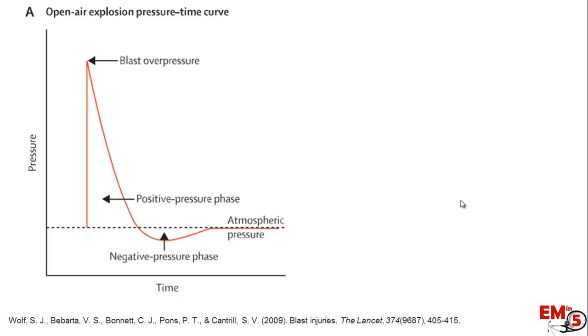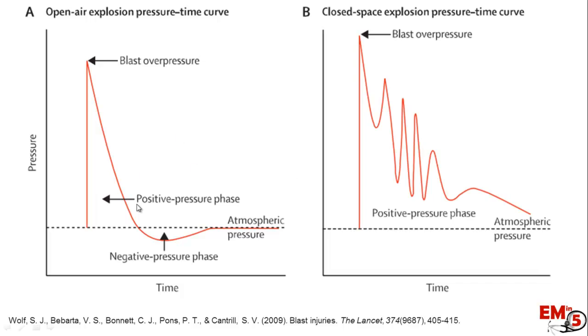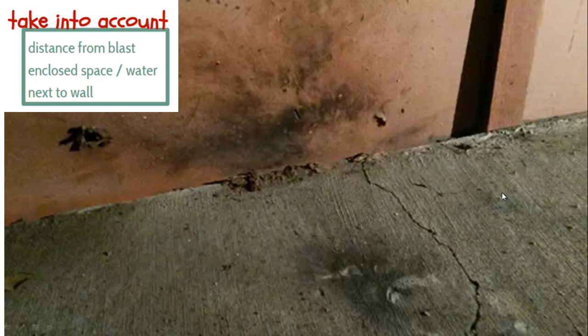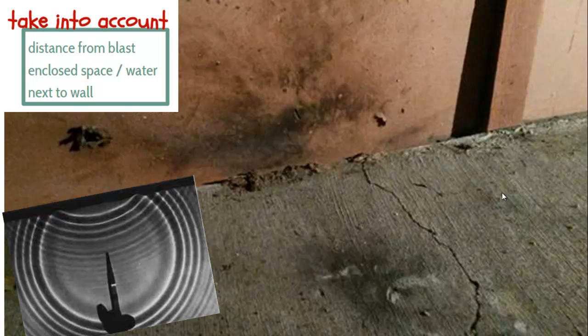Let's go back to this graph. In an open air explosion it looks like this, and this is what it looks like in a closed space. You can see this blast overpressure — the energy bounces around the room in an enclosed space and causes multiple blast pressure waves, resulting in a lot of injury. And the same thing can happen even just next to one wall: that energy bounces off the wall and comes back, giving you about twice the amount of blast.